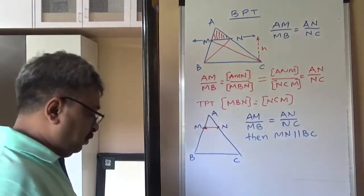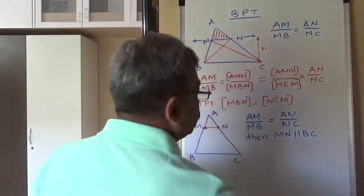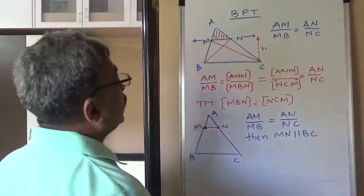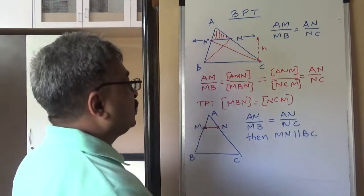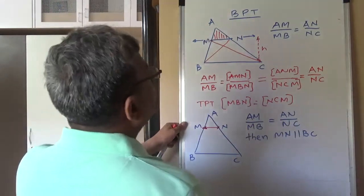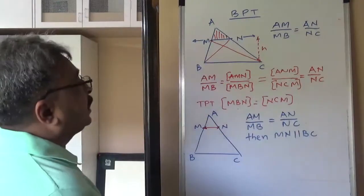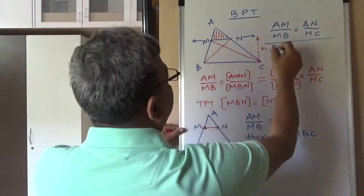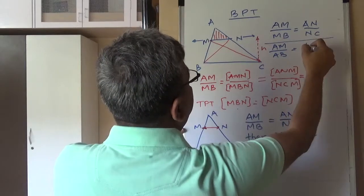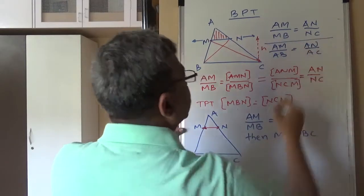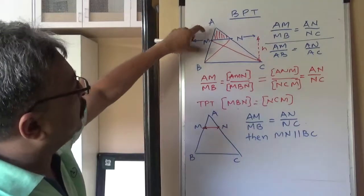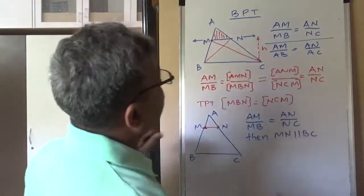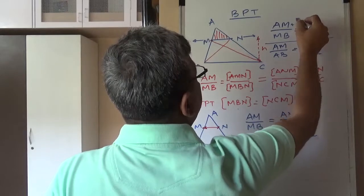That is how the solution of converse of BPT goes. These are absolutely important because these theorems will be useful to us to prove similarity. And hence, one must understand the proof of these two. Without using similarity, it is based on the area. Now, once we have these results, like AM upon MB is equal to AN upon NC, then immediately we can say AM upon AB also equals AN upon AC.